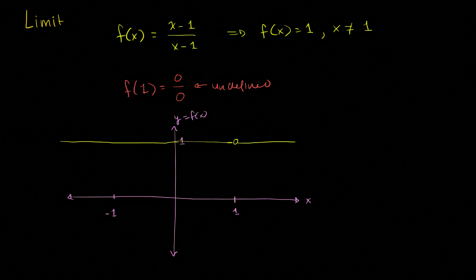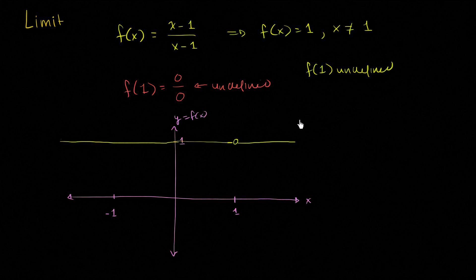So if someone were to ask you what is f of 1, you'd go to the graph, see there's a gap over there, and it is undefined. f of 1 is undefined. But what if I were to ask you, what is the function approaching as x gets closer and closer to 1? Now this is starting to touch on the idea of a limit.